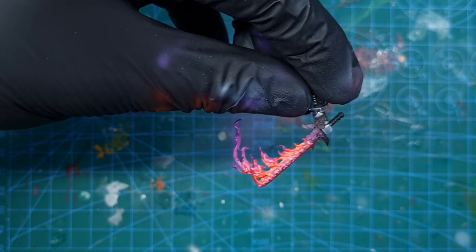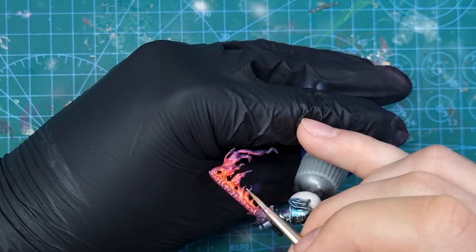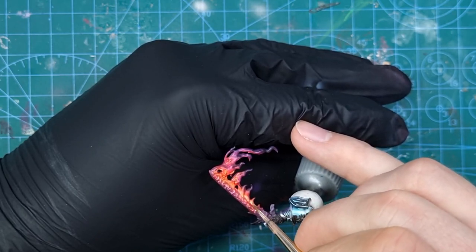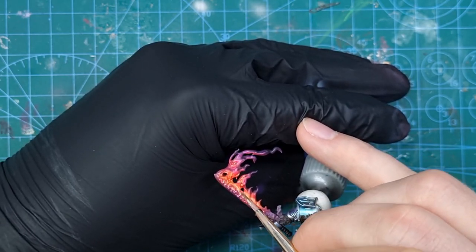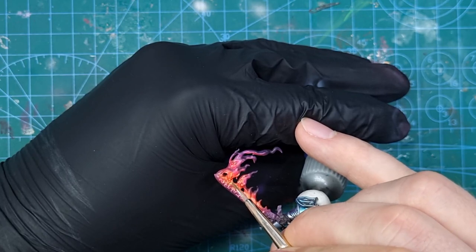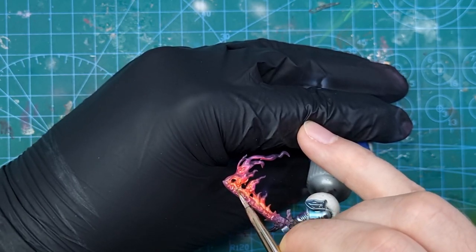Slowly I am getting the effect which I wanted to achieve. But to maximize the effect, I will introduce the pure yellow color with some white paint in the mix. It will create our final contrast and the glow effect.